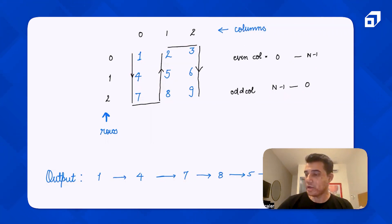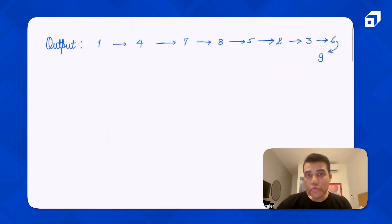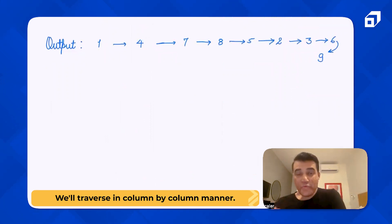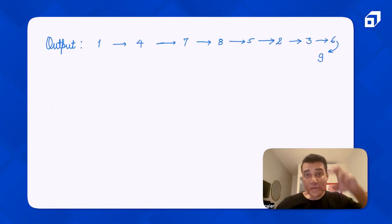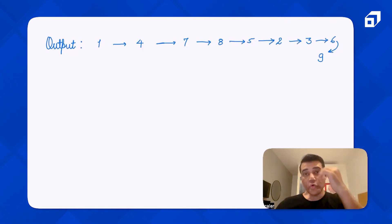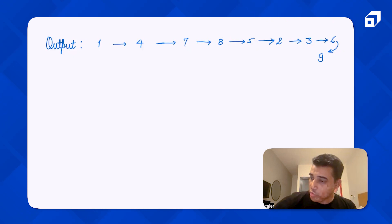We can conclude that we have to traverse in a column-by-column manner. In each column, if the column index is even, you go from 0th to n-1th row; if it is odd, you go from the n-1th row to the 0th row. The code for this is going to look something like this.